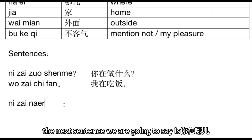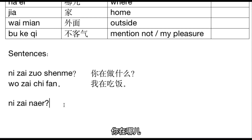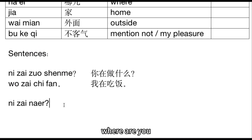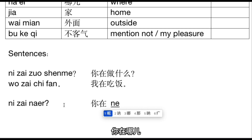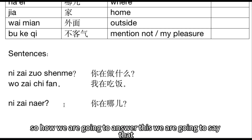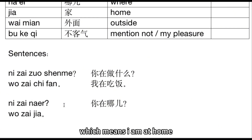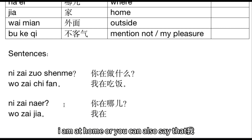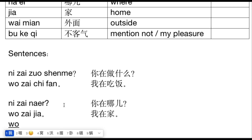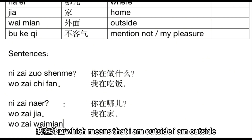The next sentence is 你在哪儿 (nǐ zài nǎr), which means 'Where are you?' To answer this, we say 我在家 (wǒ zài jiā), which means 'I am at home.' Or you can also say 我在外面 (wǒ zài wàimiàn), which means 'I am outside.'